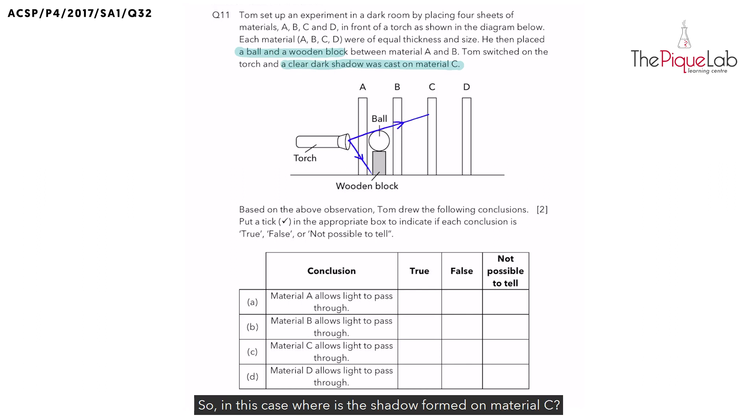So in this case, where is the shadow formed on material C? It is actually formed on this portion over here, the part that I highlighted. The highlighted part represents where the shadow will be seen or where the shadow will be cast. This is the portion that shows light is blocked.